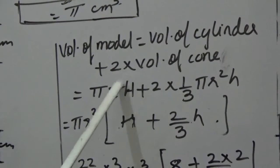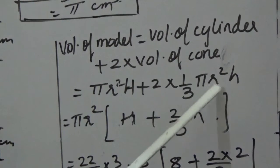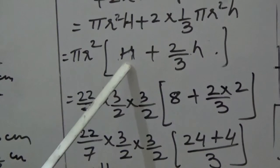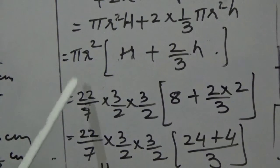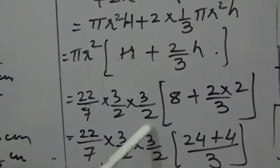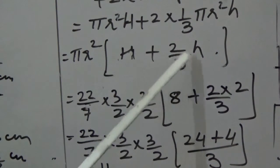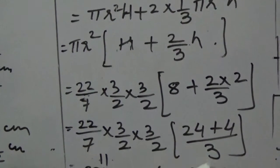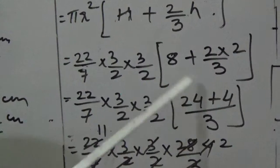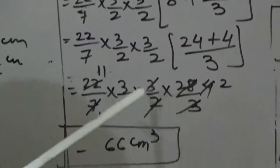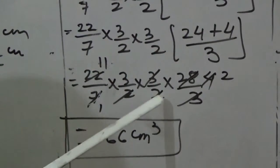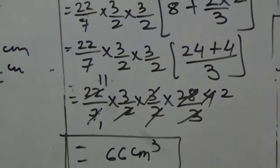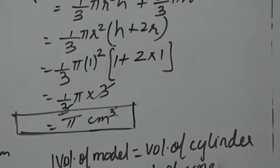Volume = πr²H + 2 × (1/3)πr²h. Taking πr² common, we get πr²(H + 2h/3). Substituting: (22/7) × (3/2) × (3/2) × (8 + (2/3 × 2)). This gives (22/7) × (9/4) × (28/3). Cancelling: 7 cancels with 28 giving 4, and further simplification gives 11 × 3 × 2 = 66 cm³ as the volume of air in the model.